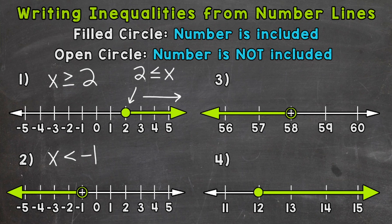Any number less than negative one would be a correct solution, and we have an infinite number of correct solutions for that inequality — the arrow represents that. We can also write that inequality starting with negative one and saying negative one is greater than x. Both of those inequalities mean the same thing; the order is just different.